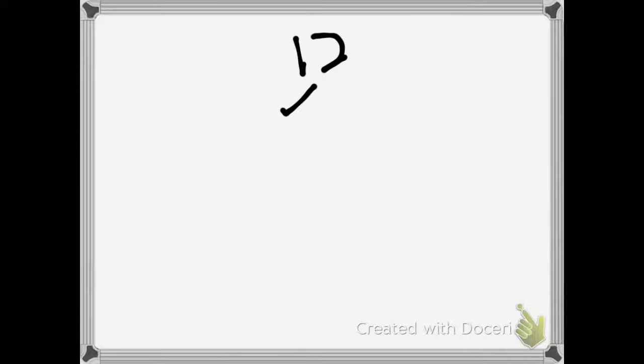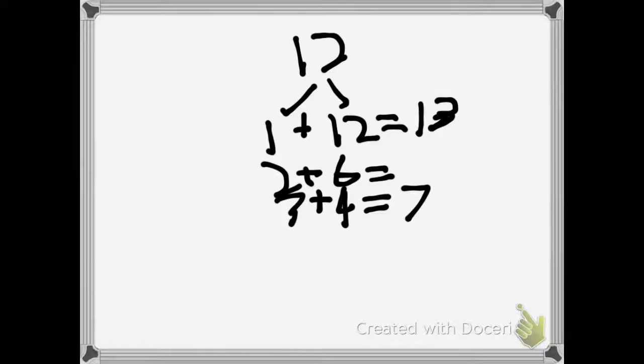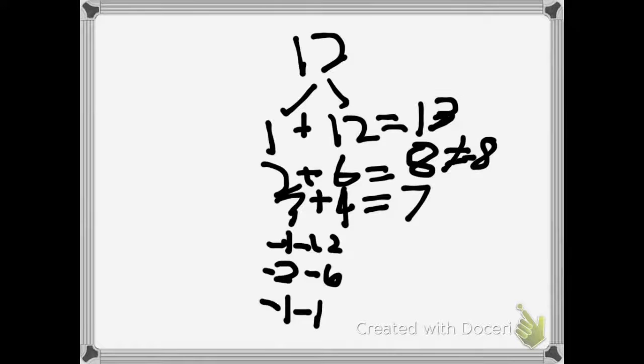Factors of 12 are 1 and 12, 2 and 6, 3 and 4. Let's see if any of these add up to 8. Well, negative 8 in this case. None of them add up to negative 8, so we see all the negative factors.